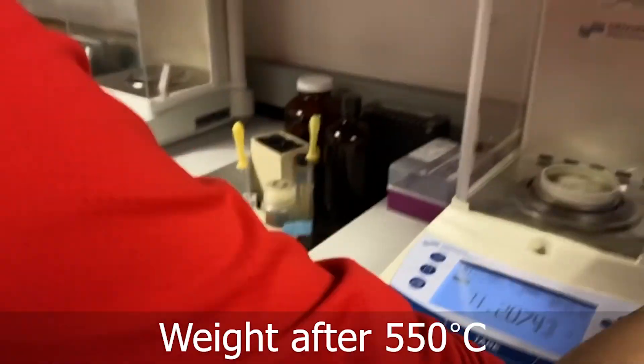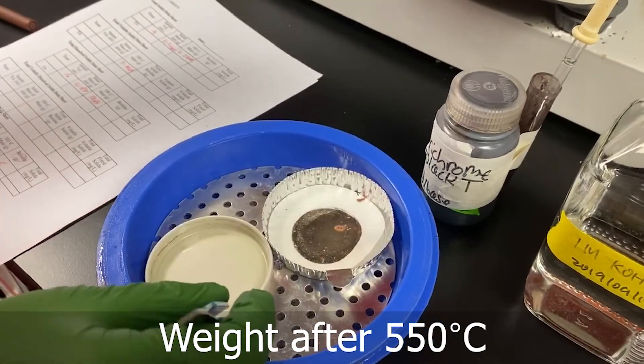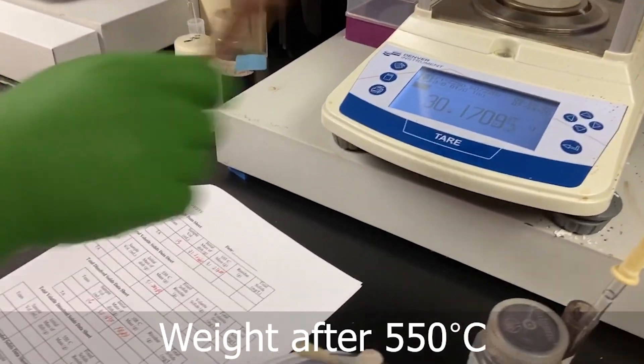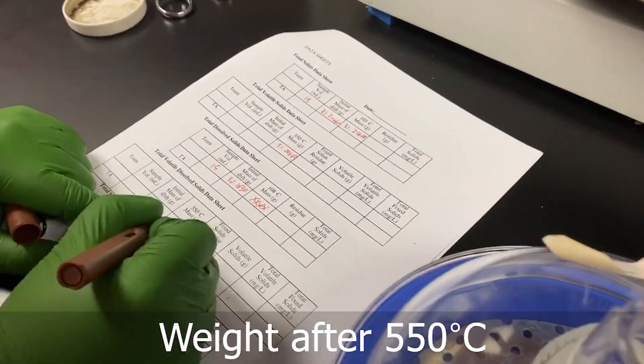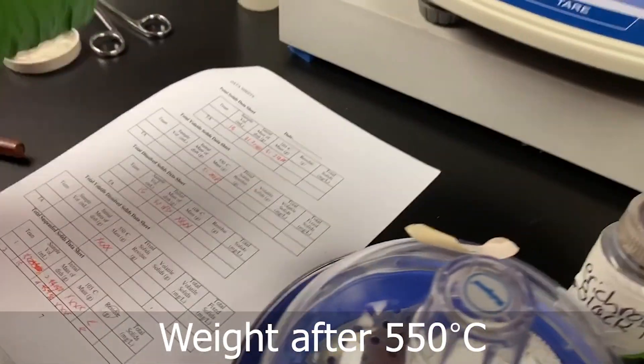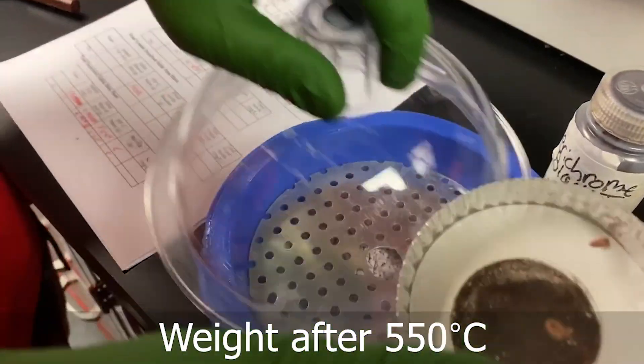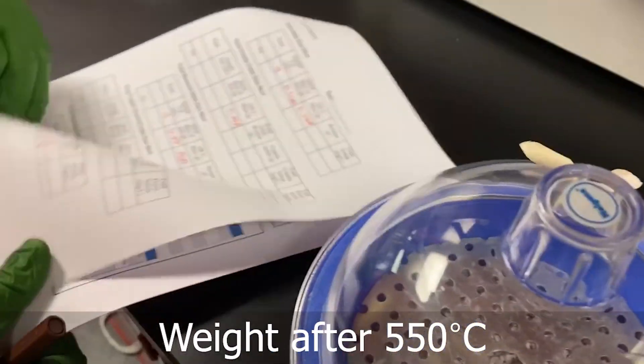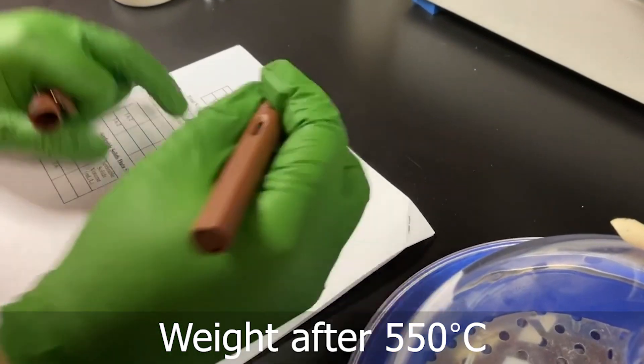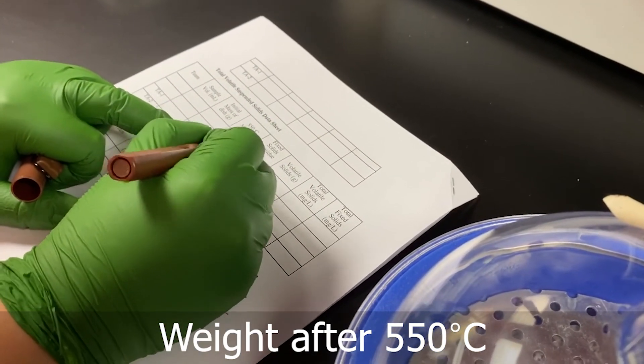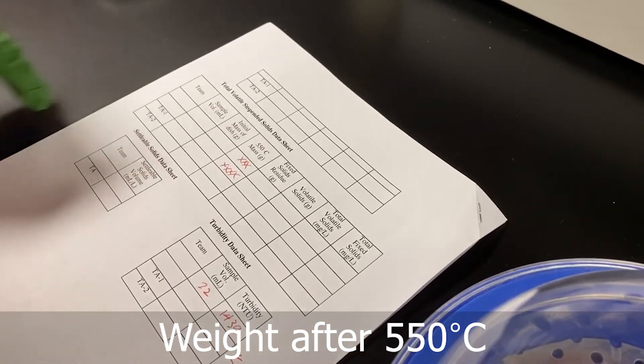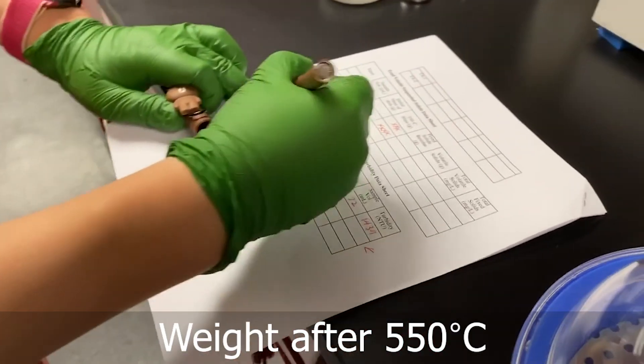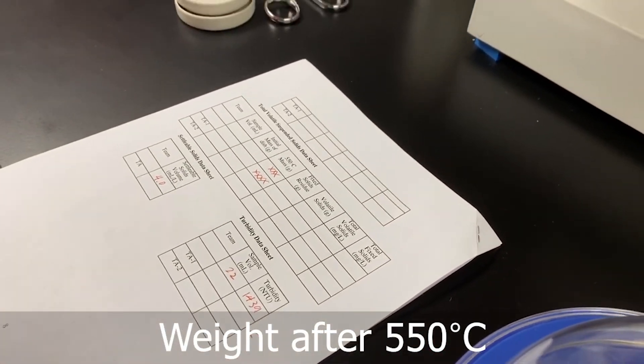So we have another mass and then we are going to measure the volatile solids. So we have almost done everything, and then we are going to write down the settleable solids reading. It's four ml. And that's it.